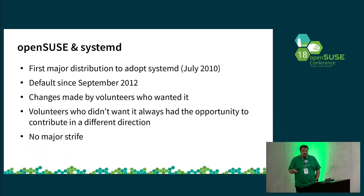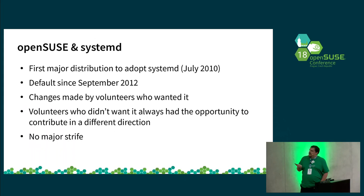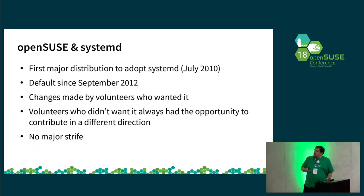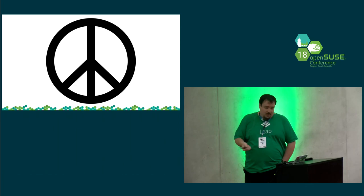This avoids problems like certain distributions had with Systemd. Systemd did not have an easy time getting into Debian — flame wars erupted. Yet in OpenSUSE, we were the first distribution to actually adopt Systemd, and nobody really argued with it, because contributors did all the work. It was there, it was merged, it worked well enough that we made it the default. Peace and happiness — mostly. Some people still don't like it, but it's hard to argue with the fact that it's there and working.